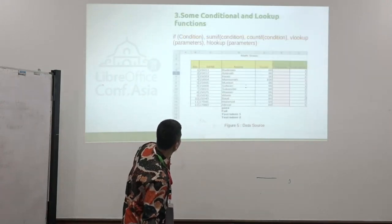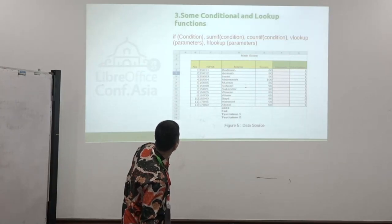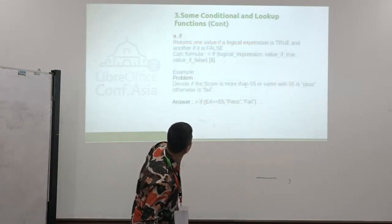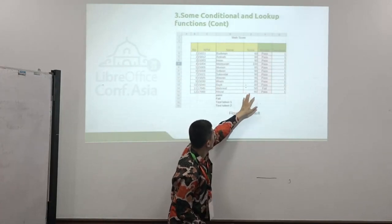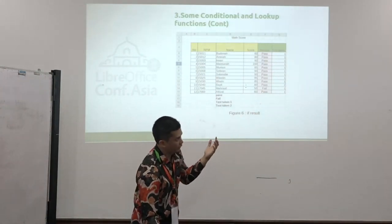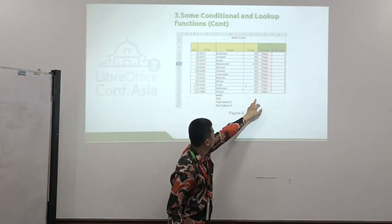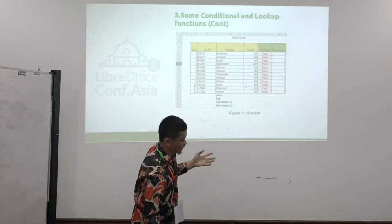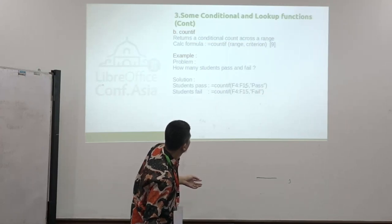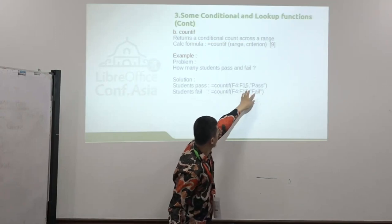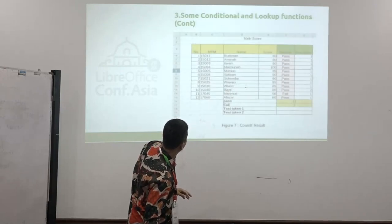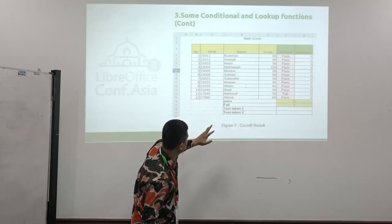This is the condition, the condition using IF, SUMIF, COUNTIF, VLOOKUP, and HLOOKUP. For example, this is the data, and then the remark, the remark will decide whether the score more than 55 is pass, and then less than 55 is fail. So, in this case, we use IF with the argument. And also, the COUNTIF, COUNTIF to count how many students passed, and how many students failed. These keywords passed and failed, and this is the range. And then, this is COUNTIF results, the pass is 11, and the fail is 1.